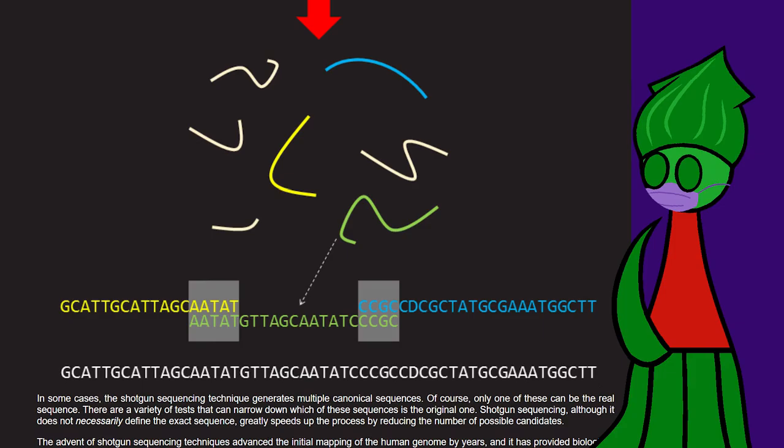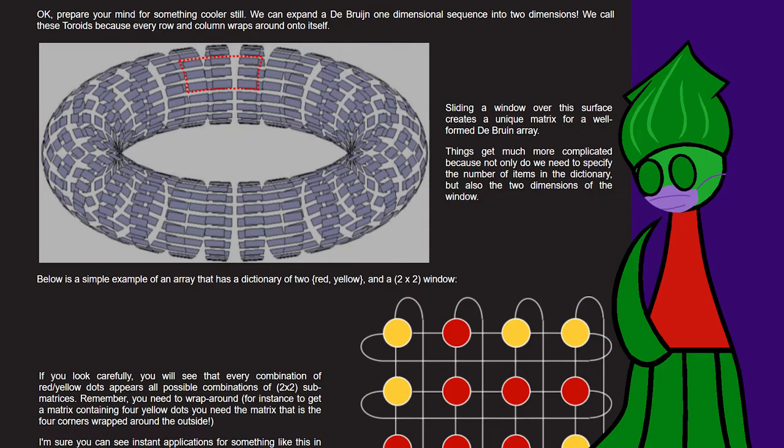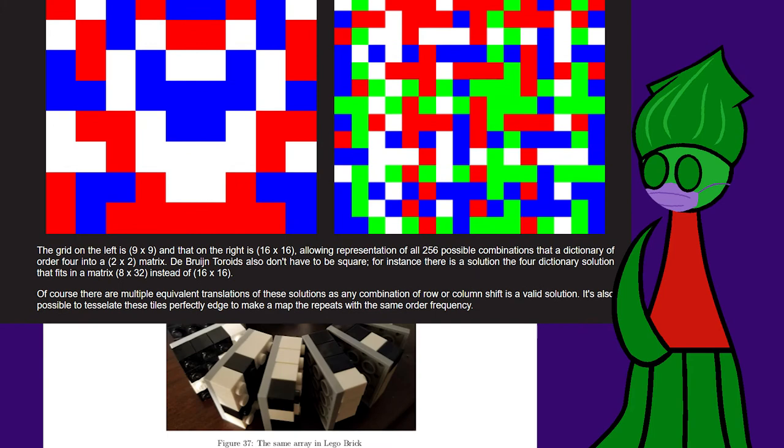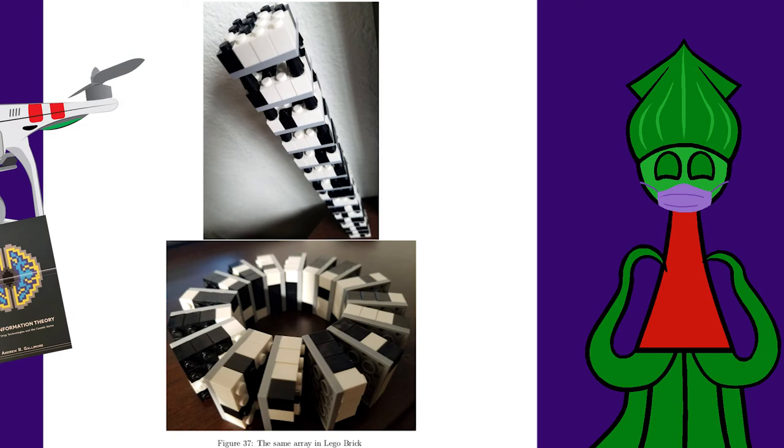A Debron torus can be used to identify position in 2D space. By recognizing what we're looking at, we know exactly where we are on the map. Theoretically, higher-dimensional tori could be used the same way. I imagine aerial drones in a warehouse navigating through a Debron hypertorus.